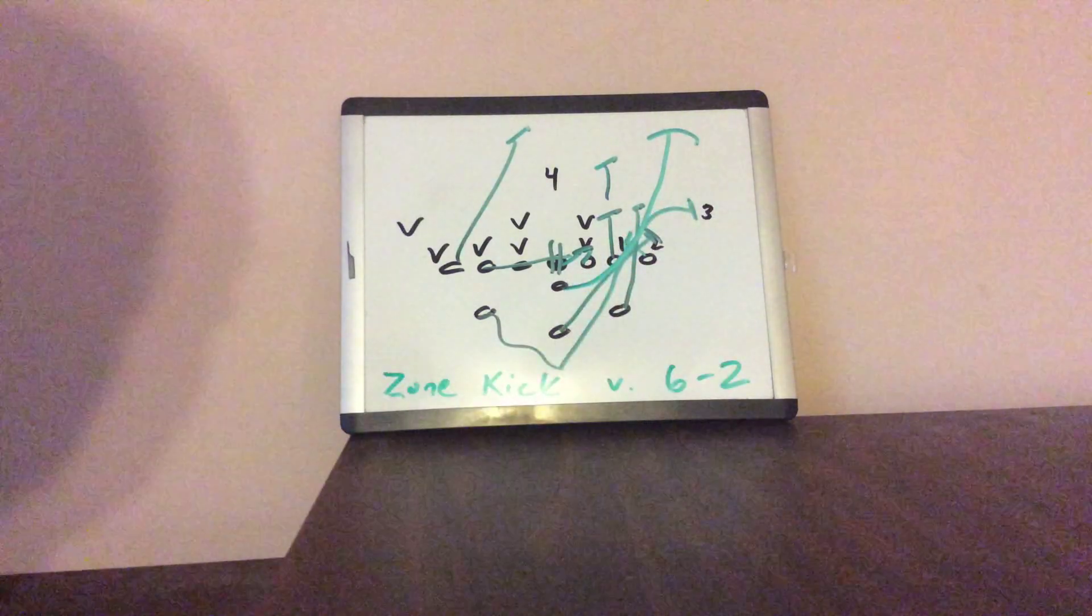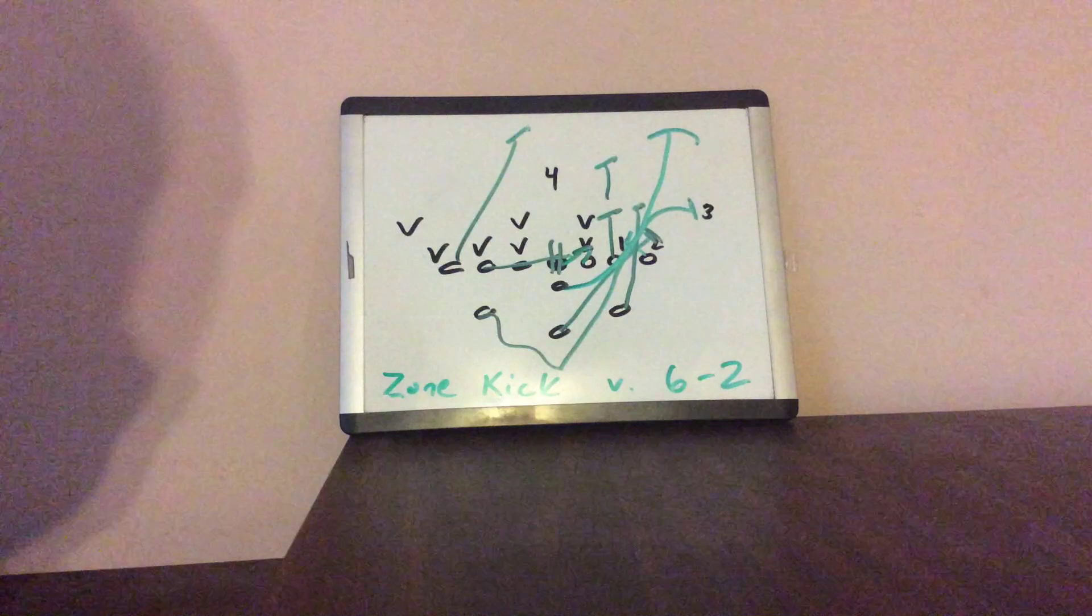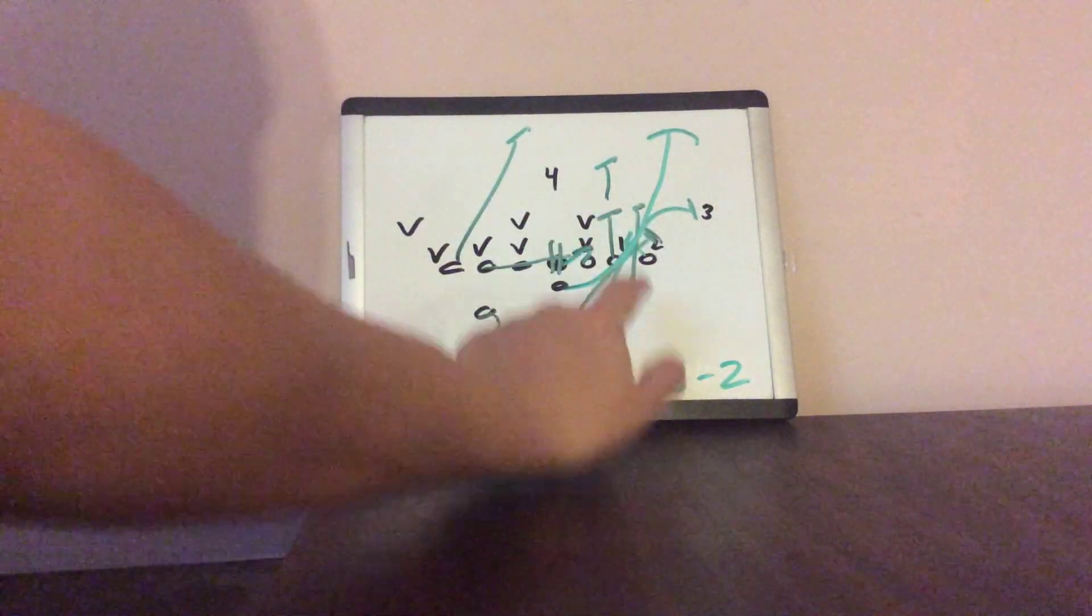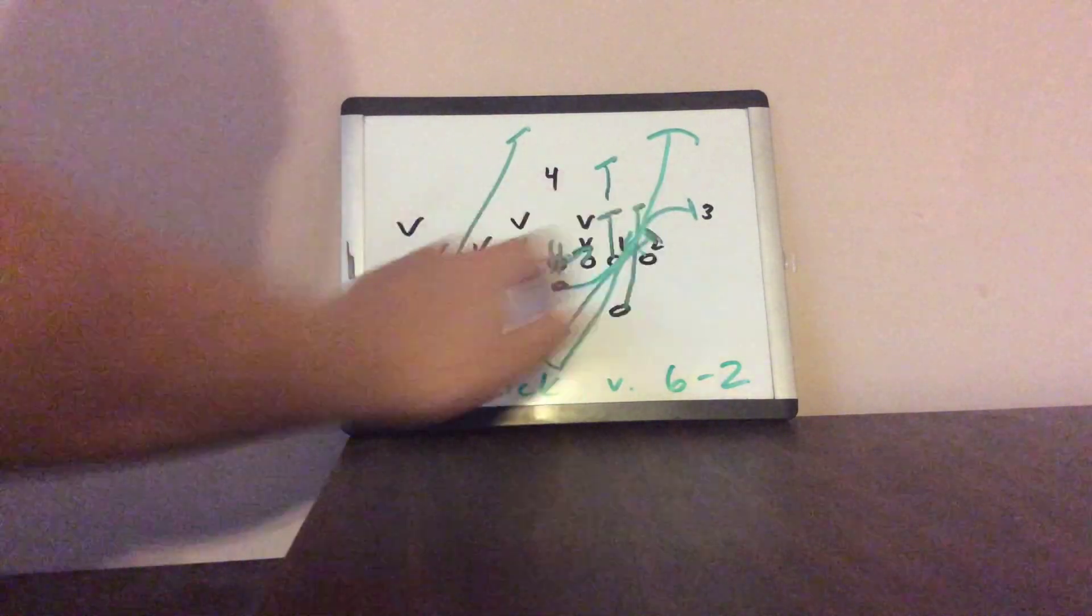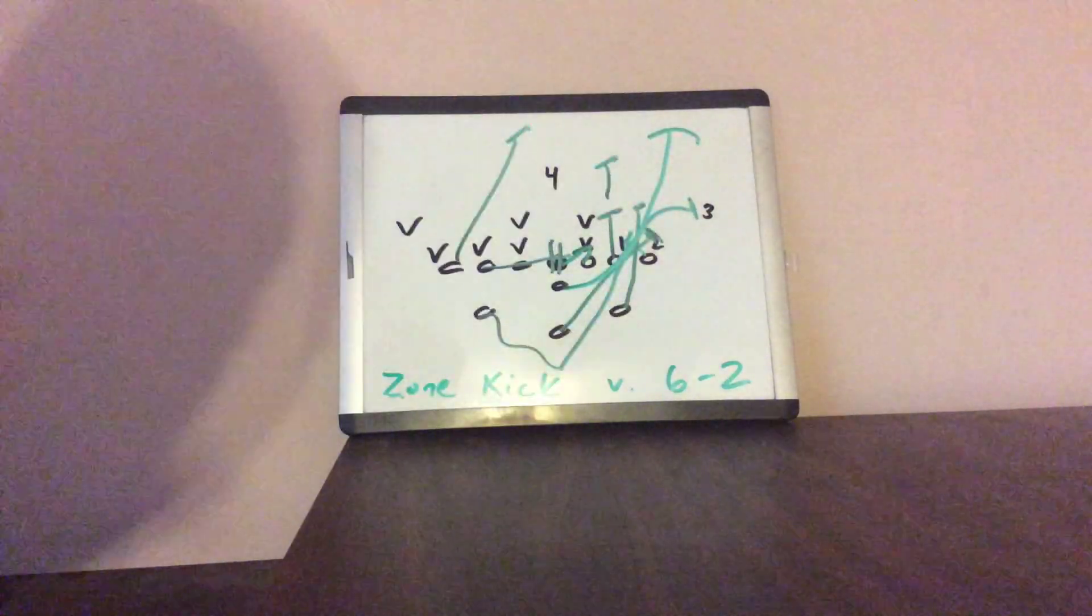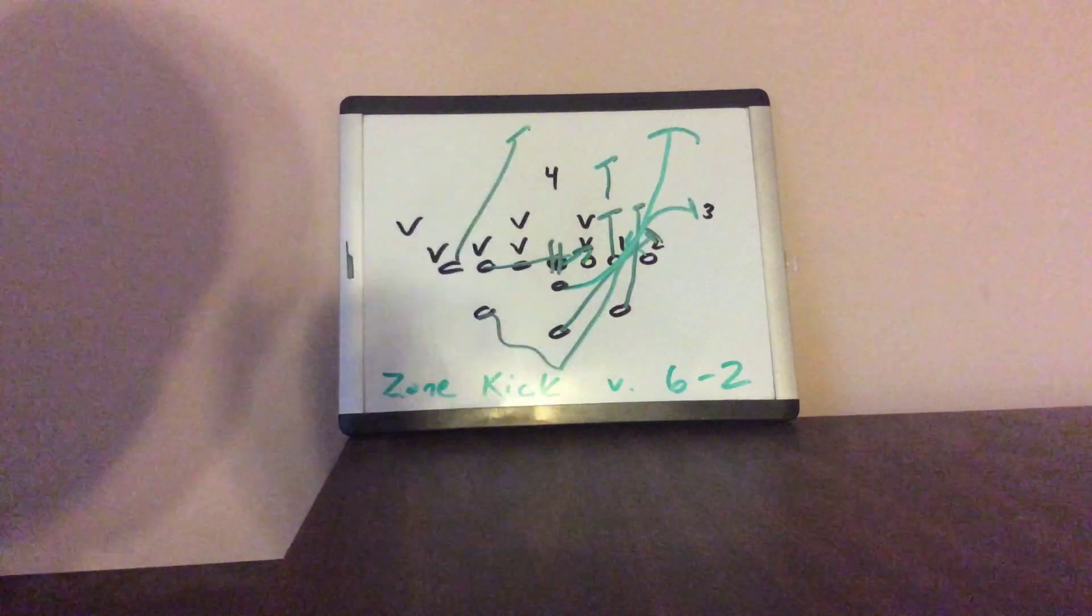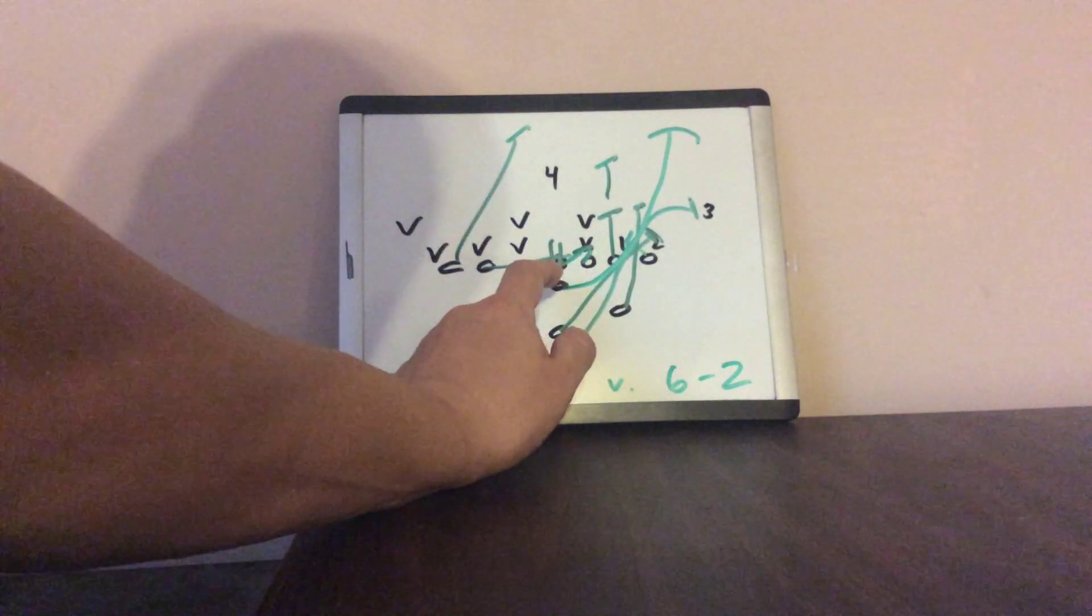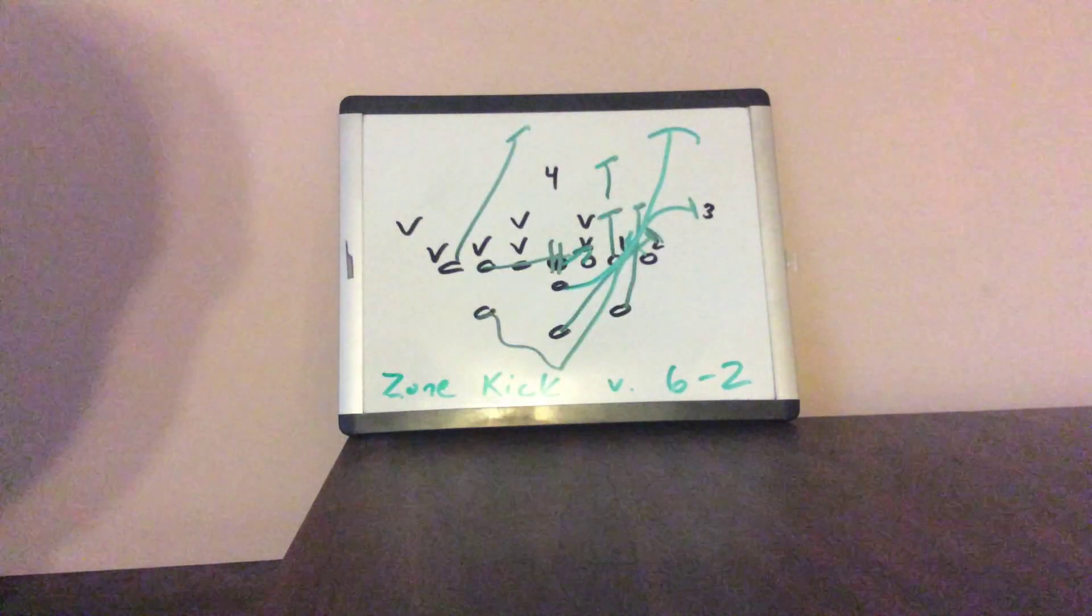So how to run zone kick: the receiver's got one, the playside A's got four, B-back has two, backside A-back has three. So you got those guys canceled. You block it the same way as triple. The quarterback simply opens up, runs off the receiver's block, turns